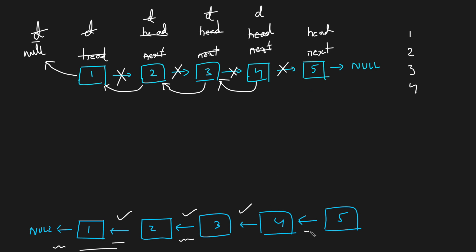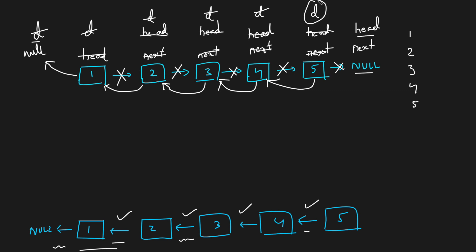We are left with one more objective: pointing 5 to 4. In the fifth iteration, we take next and point it to null (the next of 5). Then we break this node and point head's next to the dummy node. Once done, dummy node moves to 5 and head moves to next, which is null. When head reaches null, we can see 5→4→3→2→1→null. Our dummy node is now the head of the reversed list, so we return it.